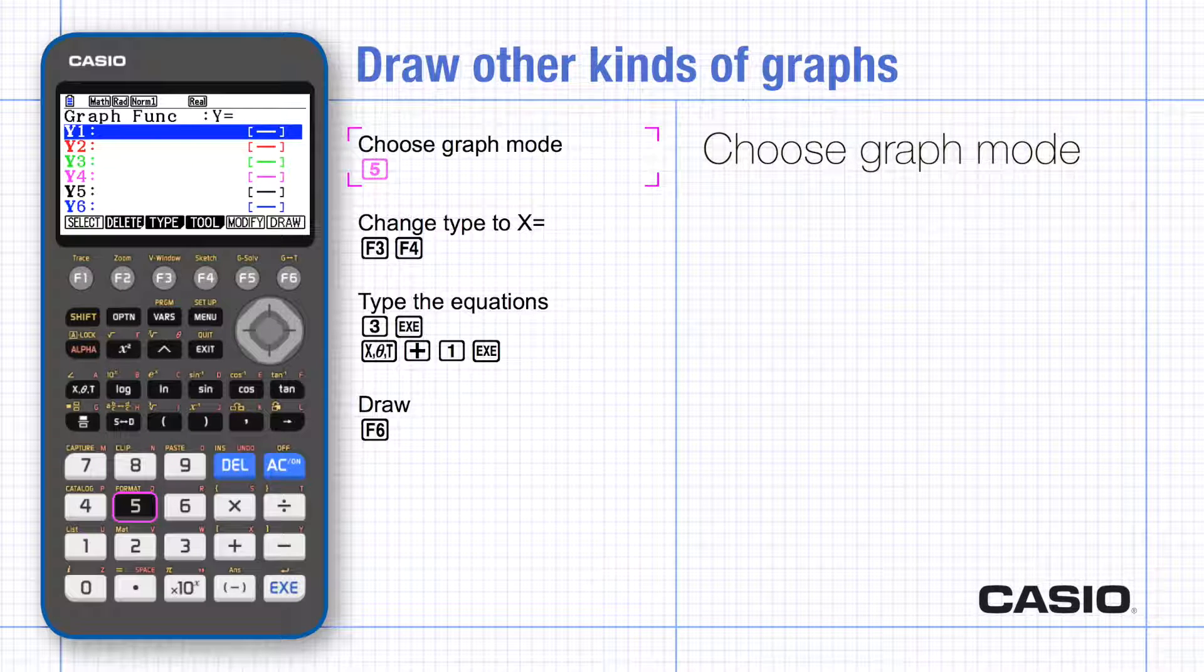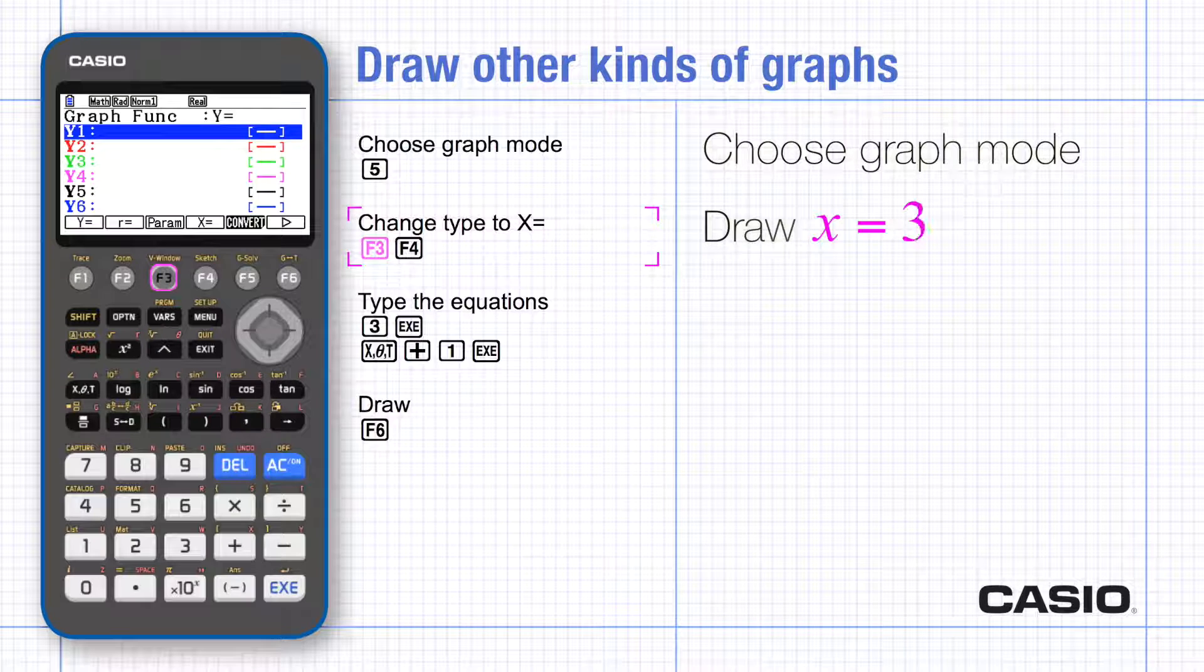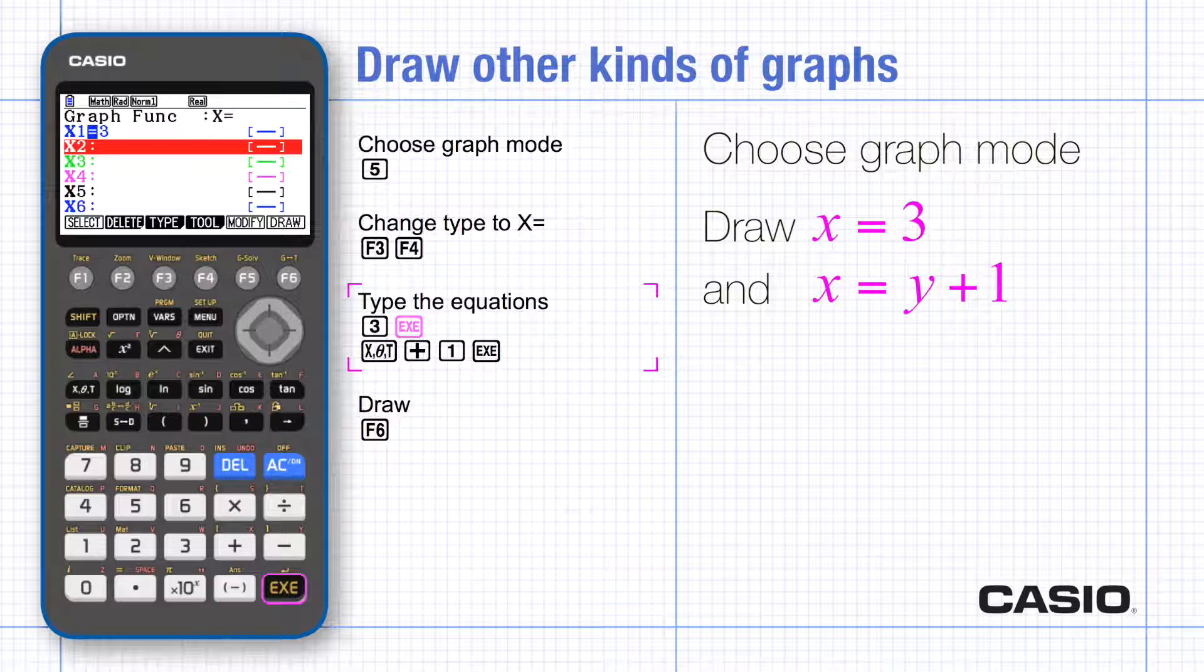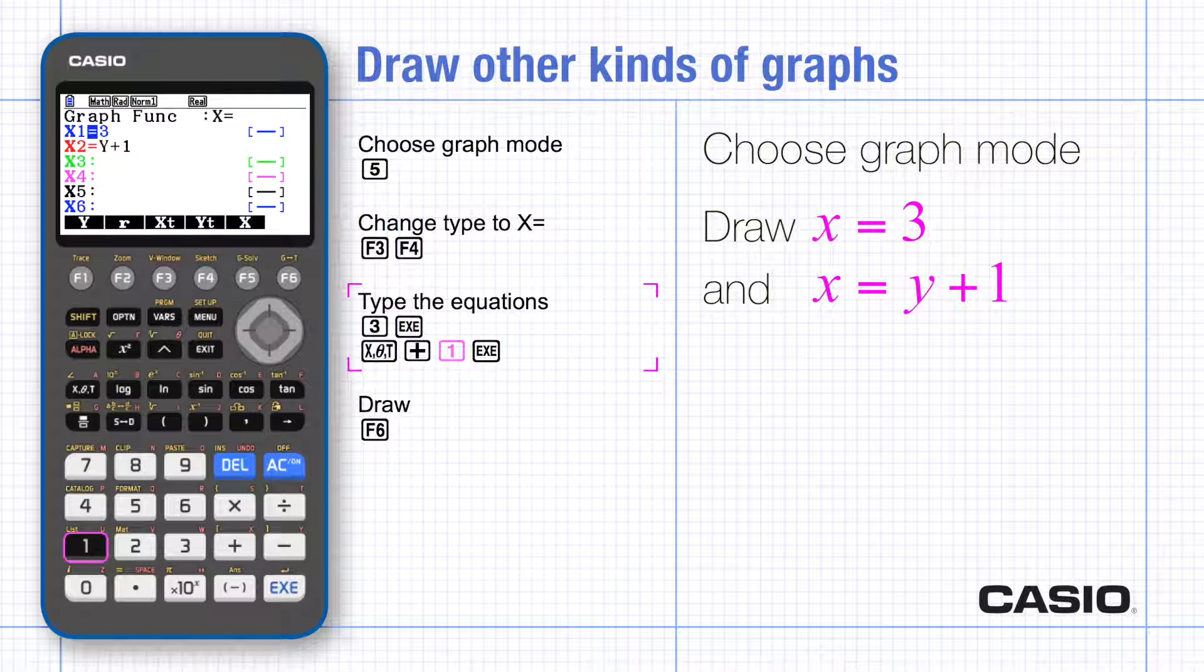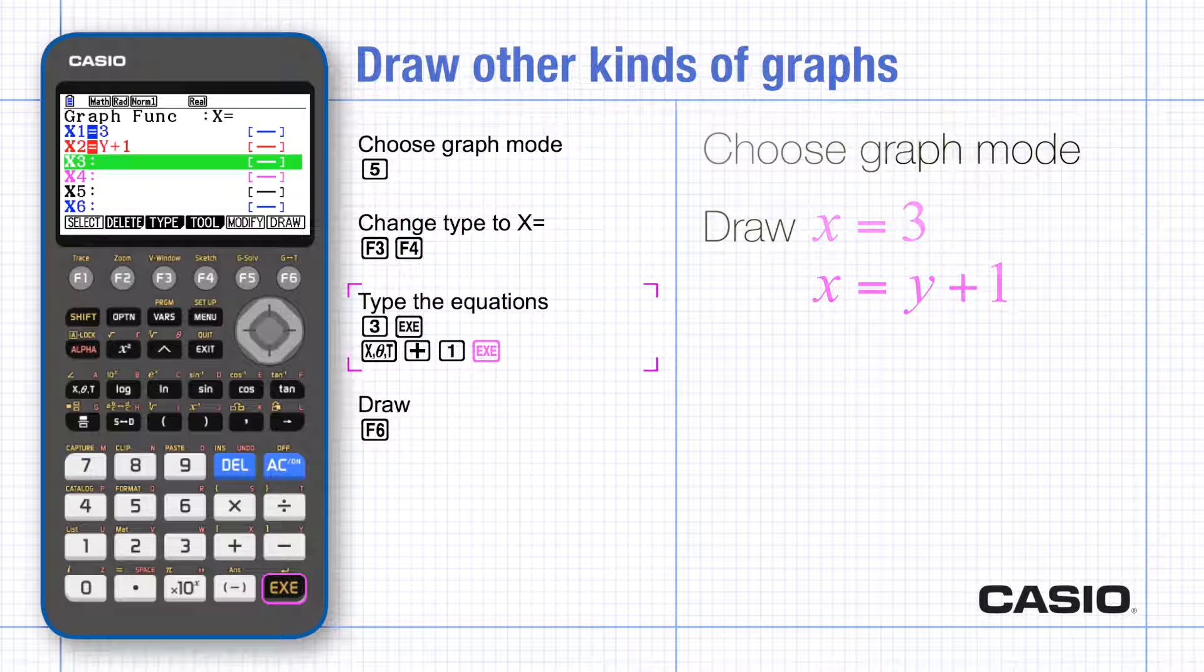Choose graph mode and then type and then select x equals. Type the number 3 and enter for the first equation. Use the x theta t key for y to enter the second equation. Draw will produce a graph with both lines.